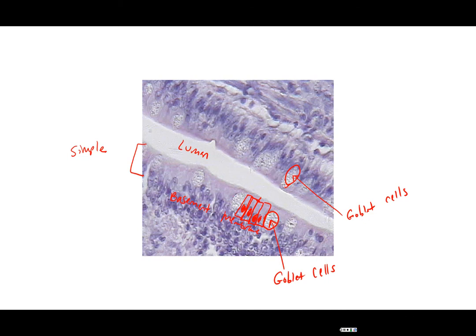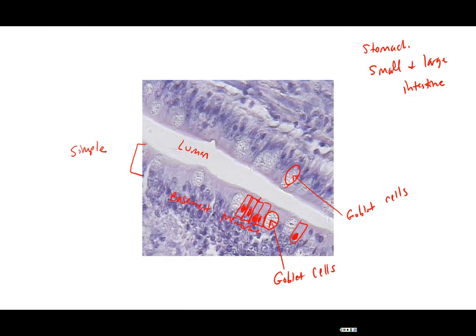Notice that the cells are tall and you can see the nucleus there. Simple columnar is often found lining the stomach, the small and large intestine. It has the job of secreting digestive enzymes to help digest the nutrients inside the lumen, and it also has the job of absorbing those digestive nutrients through the cell so that ultimately they can make their way into the bloodstream.